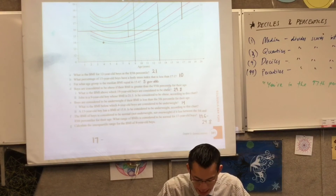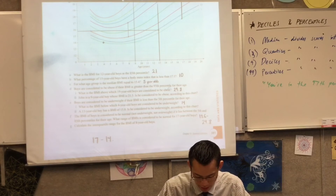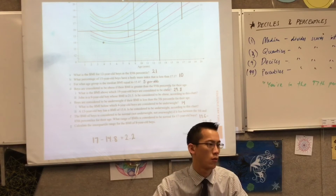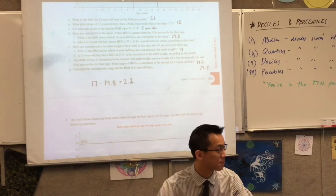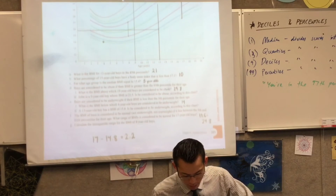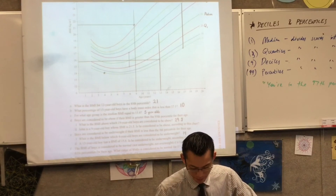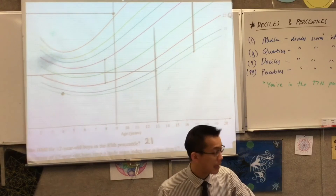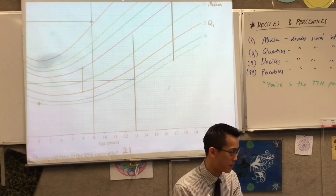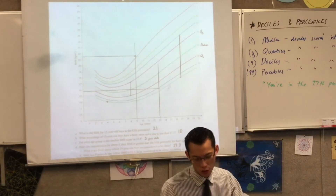It looks like 17 take away — I think 14.8 is pretty much bang on. So the difference between those is the interquartile range. The interquartile range is only between the 25th percentile and the 75th percentile because they're quartiles. The percentiles include the quartiles in them — you just have to know which one.